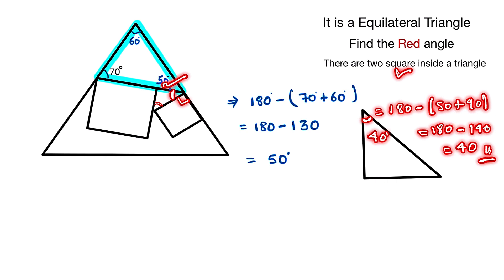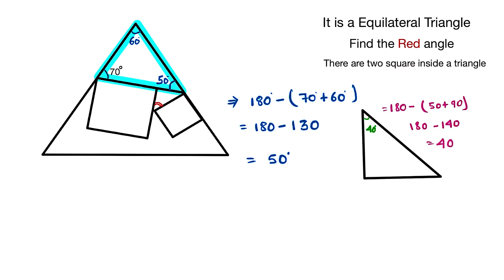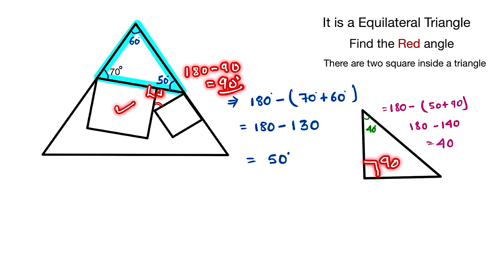This angle is equal to 180 minus (50 plus 90), which is 180 minus 140, equal to 40 degrees. So this angle is 40 degrees, and this angle here is 90 degrees as given.